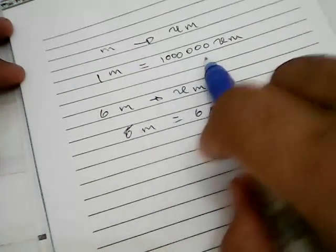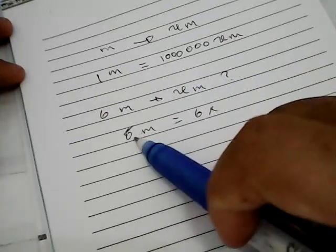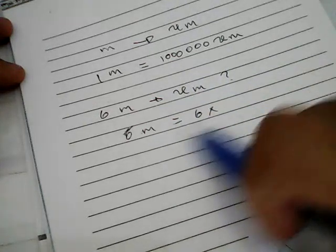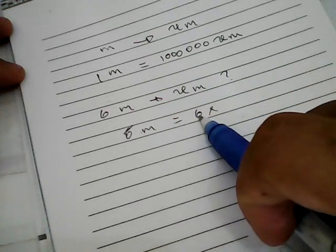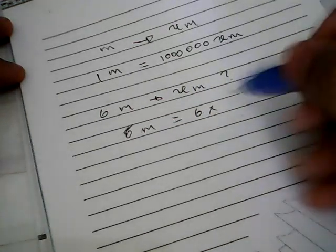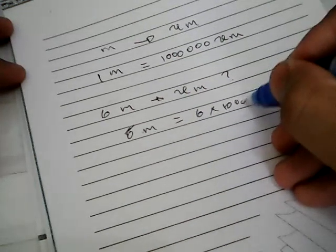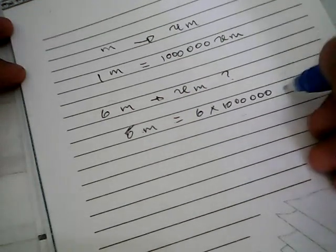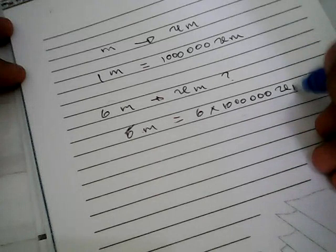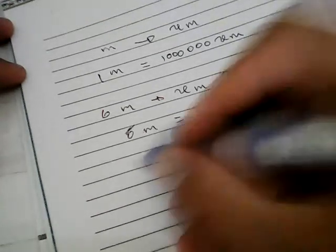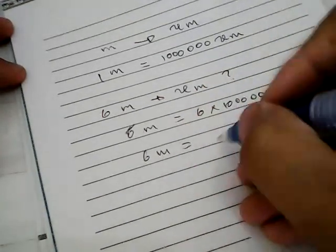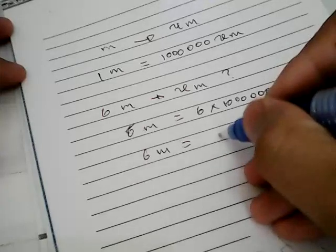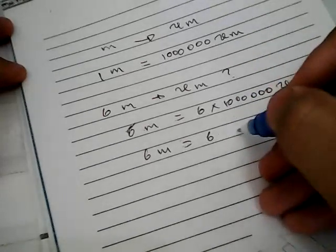Because anything that comes before meters, for example this one, we need to multiply with one thousand. In this case I want to convert six meters to micrometers, so I need to multiply six with one million micrometer.